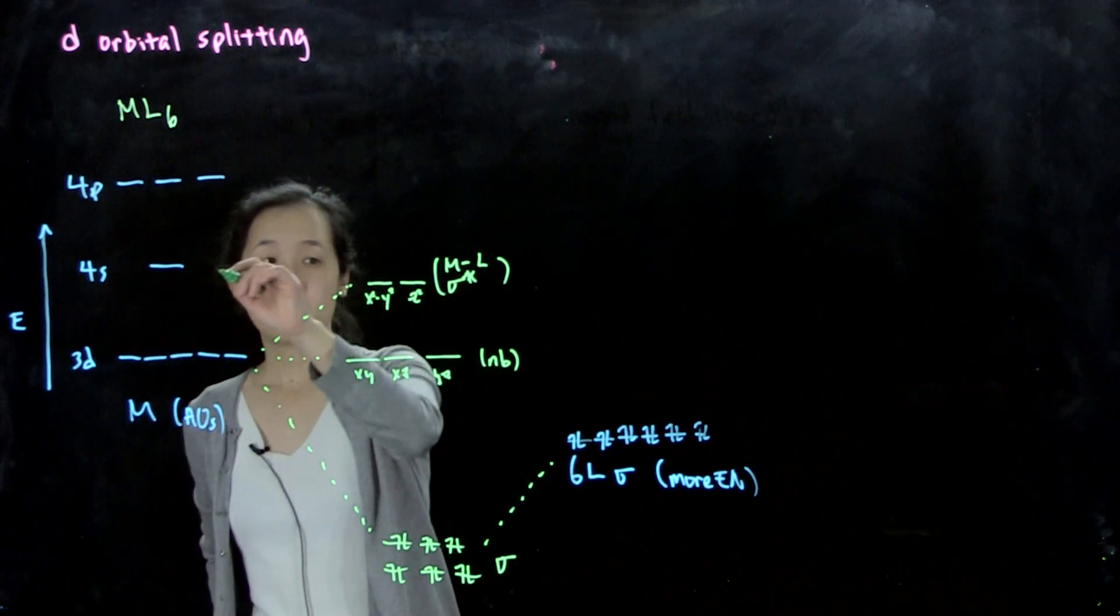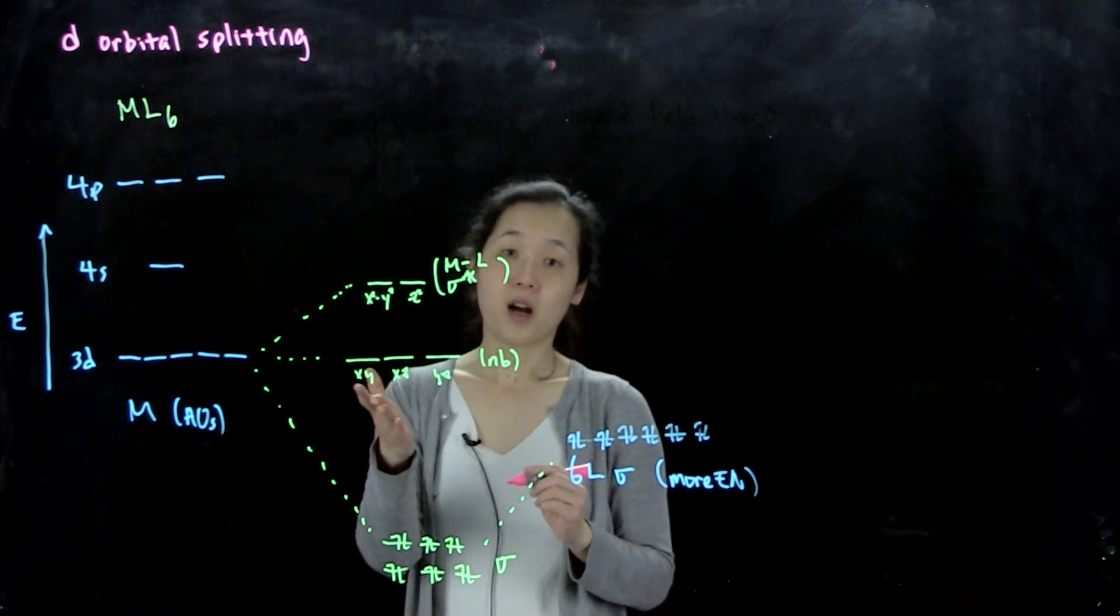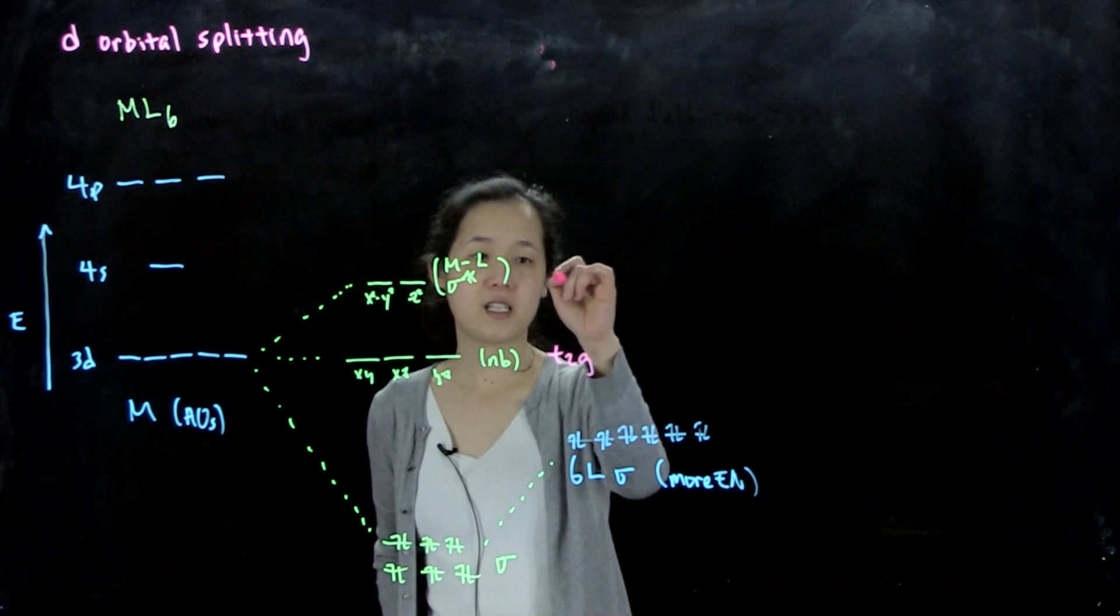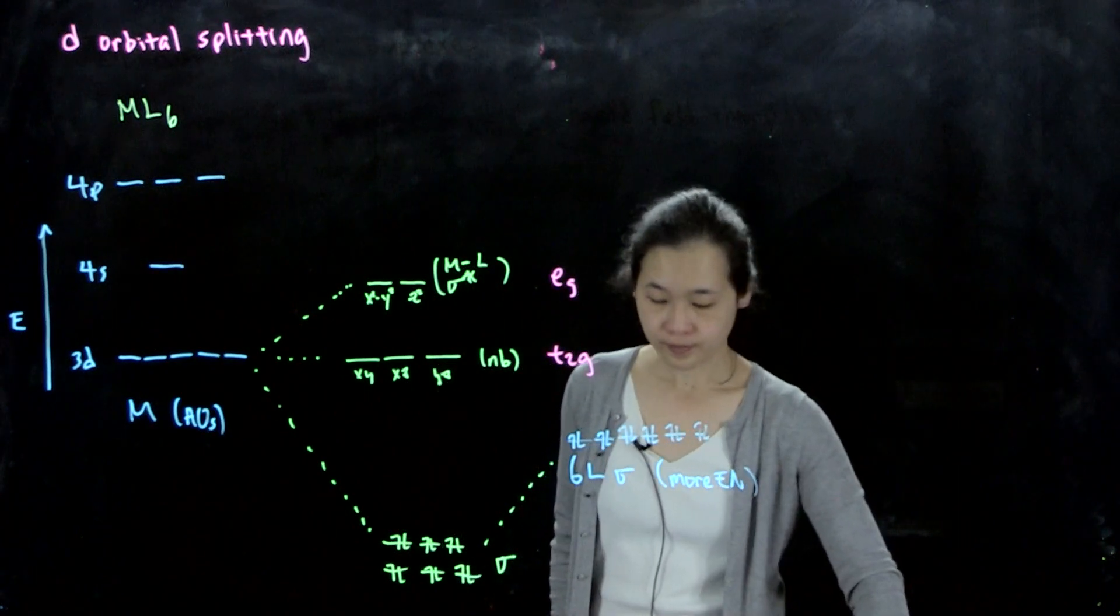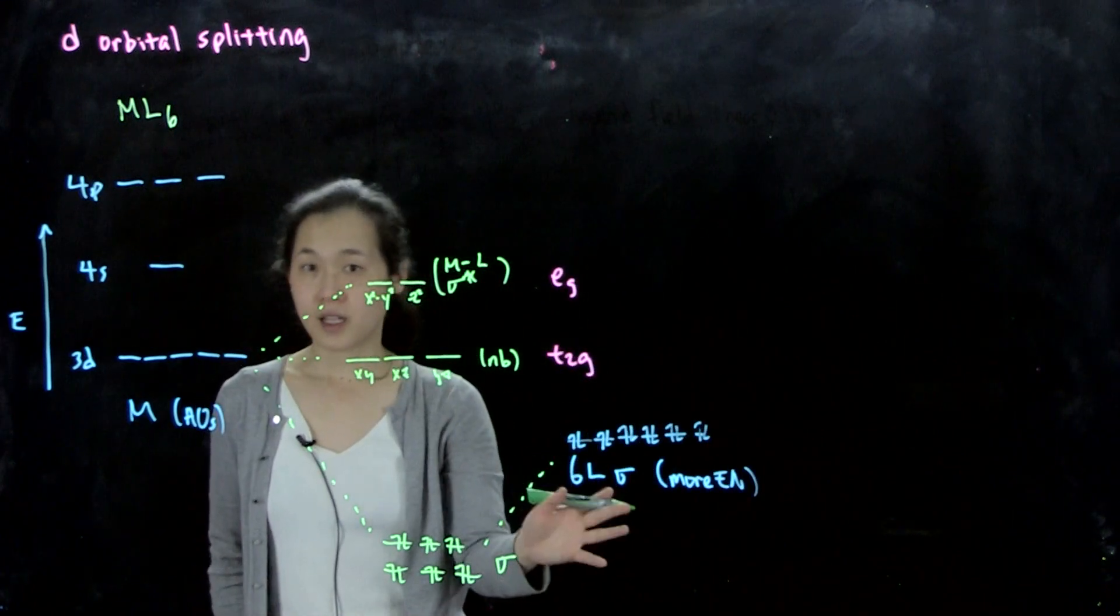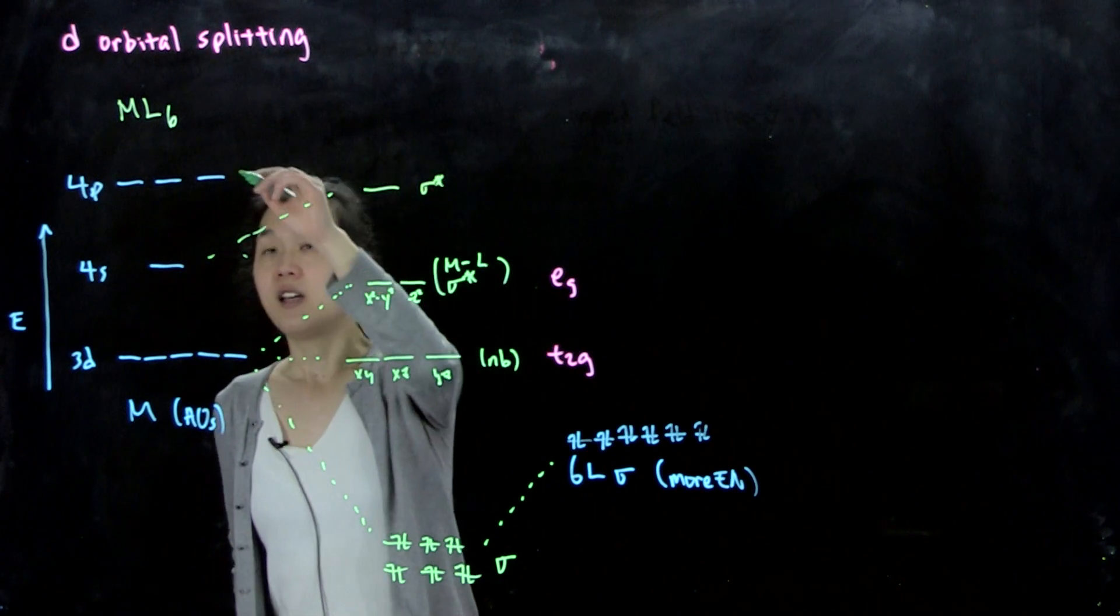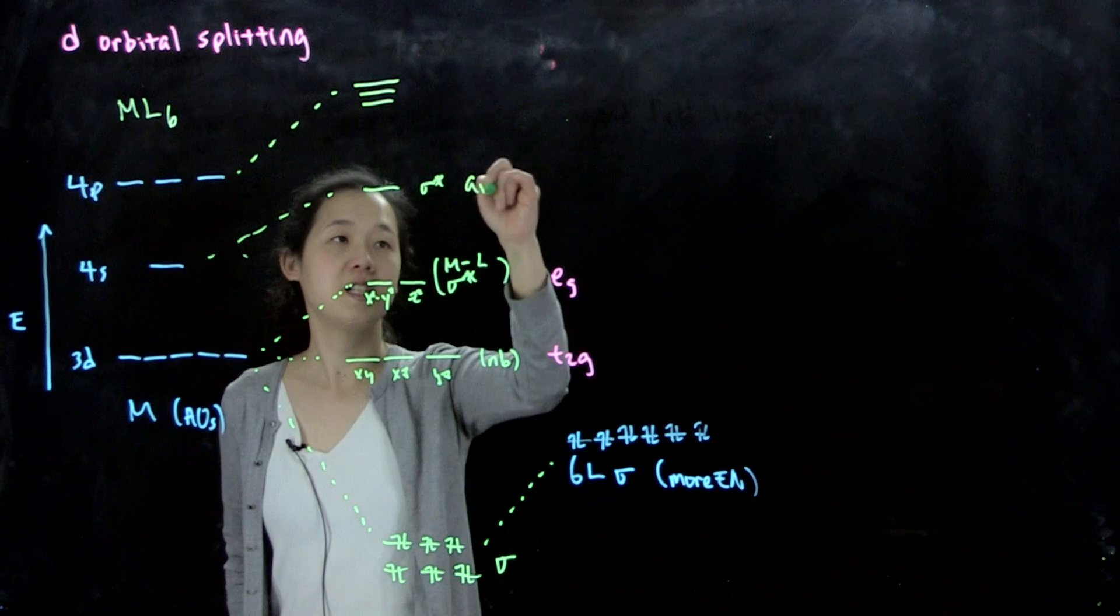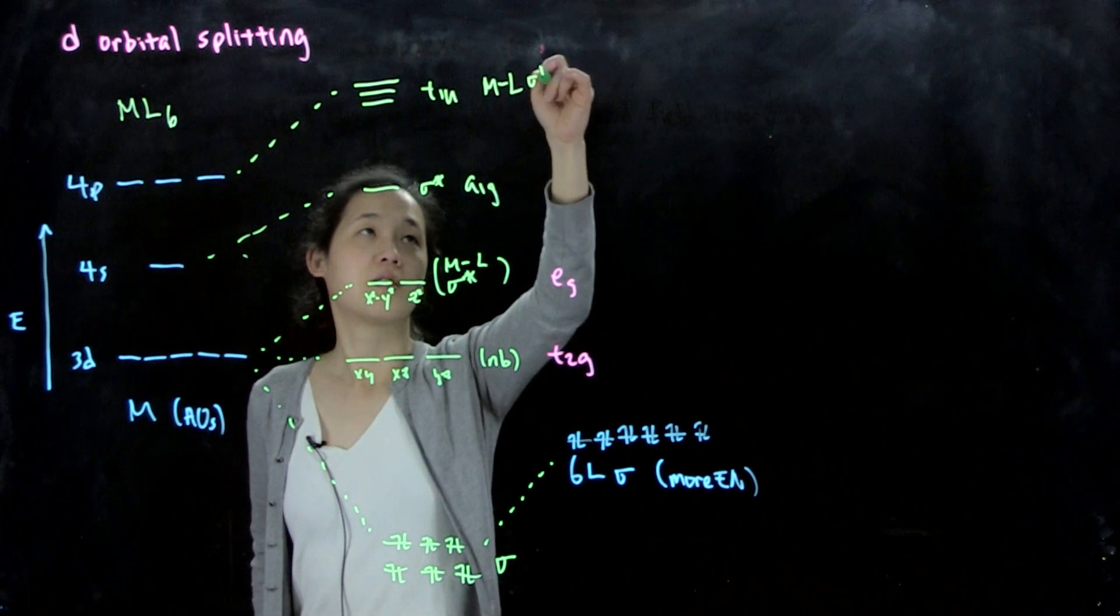For symmetry labels, you might see in the literature or in the textbook, for octahedral, this is our T2G and EG. They have symmetry labels, so don't worry about those unless you take advanced inorganic. I'll just finish the diagram. Our s orbital also can interact with the ligand orbitals, so we again form an antibonding combination. This is also sigma star. And then our p orbitals also can interact. This is A1G, this is T1U, also ML sigma star.